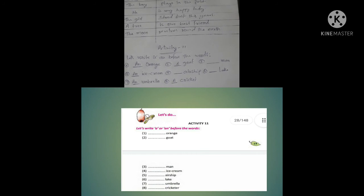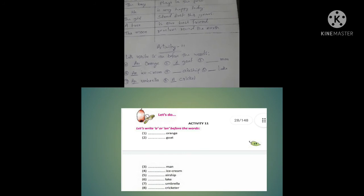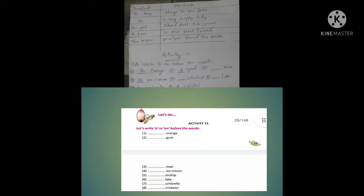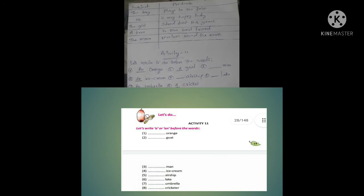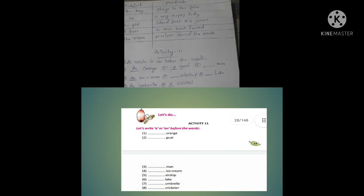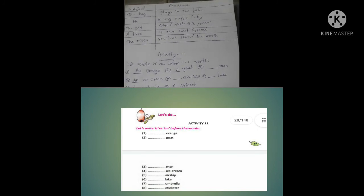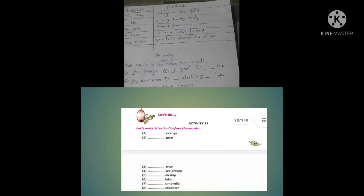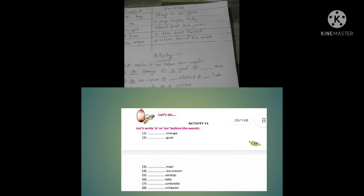Activity 11: Let's write 'a' and 'an' before the words. So just one word: an orange. Number 2: an egg. Number 3: an eagle. Number 4: a man.